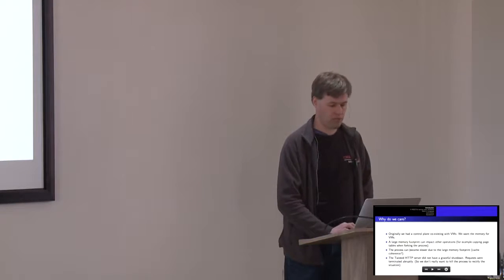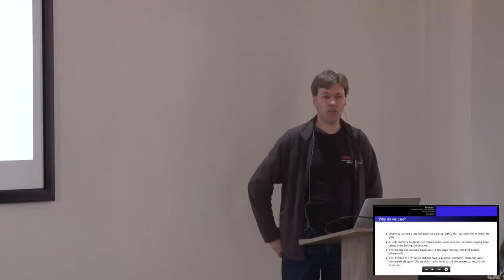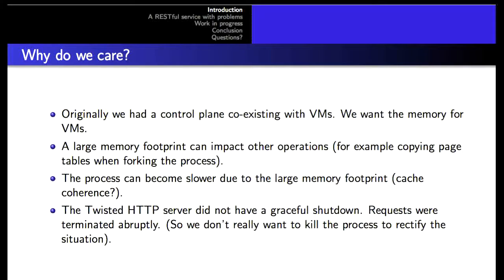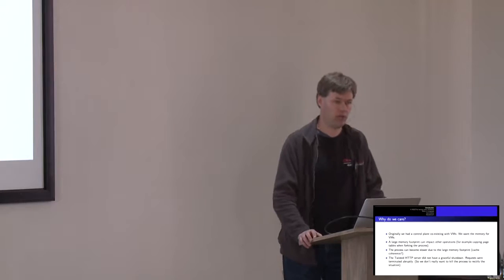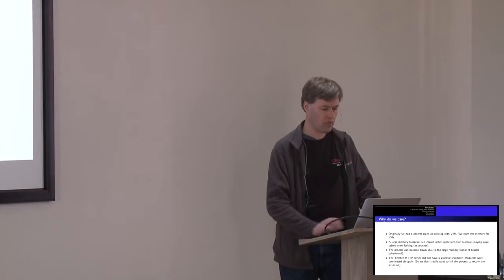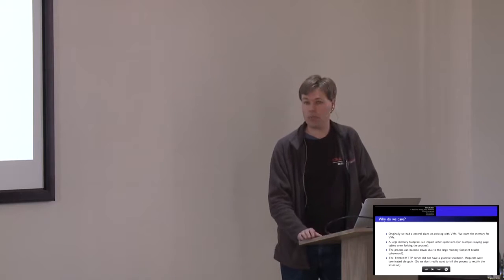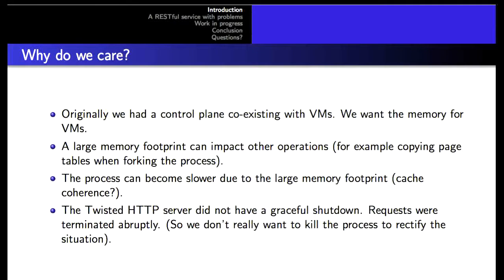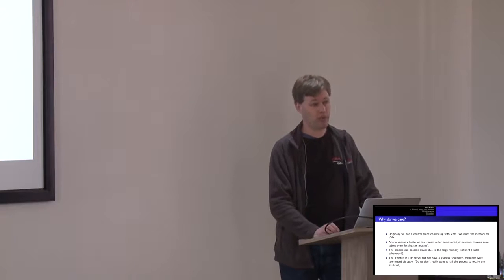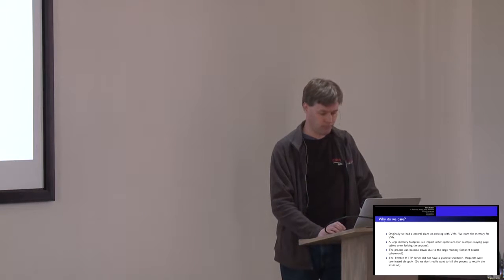The other problem is that as you increase the memory size of your process, it tends to get a lot slower. Python's not very good at being a cache-coherent kind of system in any case, but as you increase the amount of memory and you have fragmentation, that gets even worse. So you do have performance problems from that as well. In our case, we use the Twisted HTTP server, so shutting down the process and restarting it means it typically cancels the calls that are in progress. You don't get to shut down those HTTP calls cleanly, which generally has an impact on the system.